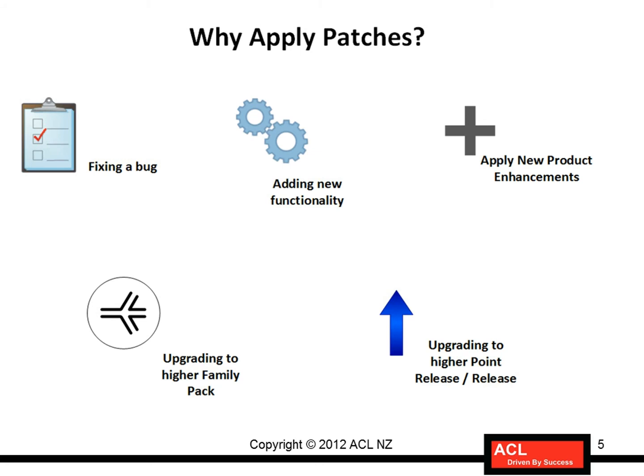Lastly, you apply patches to upgrade to a higher point release or a higher release. A point release is something like — if you are already on a 12.1 system, in the background that system could be 12.1.0 or 12.1.1. So 12.1.1 is what you call a point release. The next release would be 12.1.2, and then 12.1.3. As new releases come into picture, they will have a large amount of application functionalities introduced through family packs combined from multiple product families, and that's where you end up upgrading to a point release.